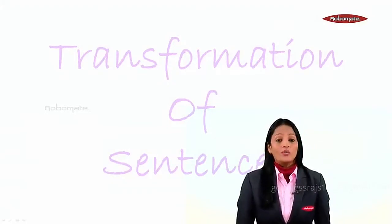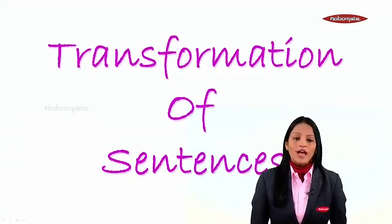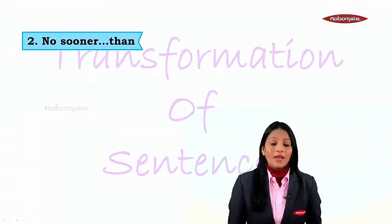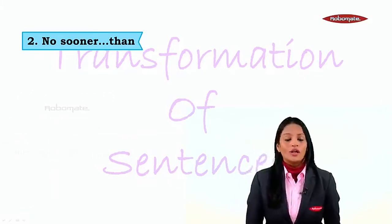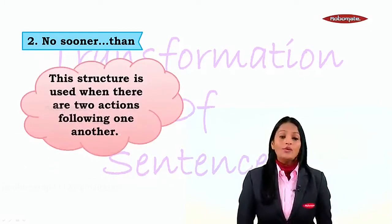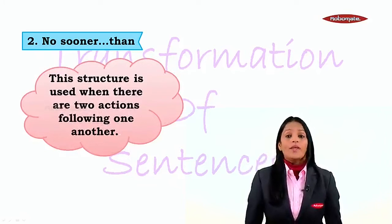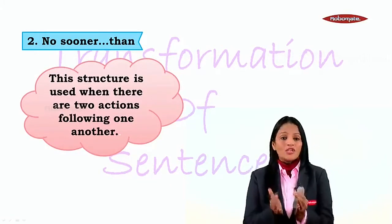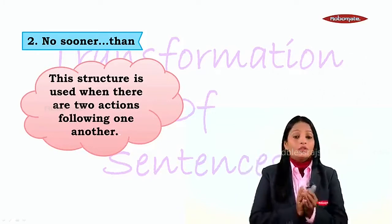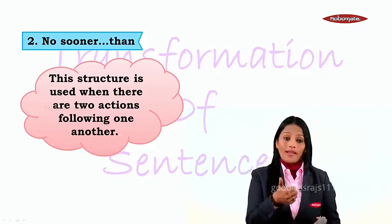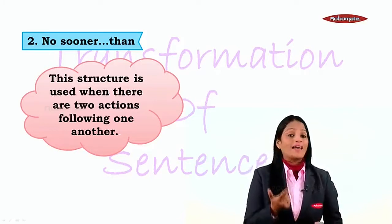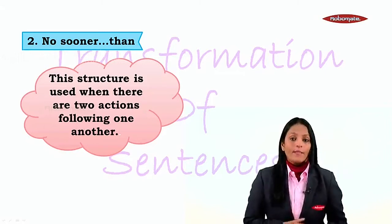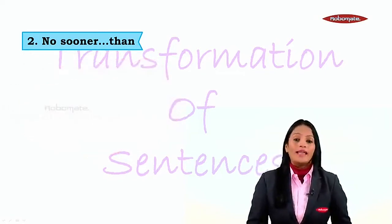Hello students. Let's go on with the next module of transformation of sentences — the next type: using 'no sooner...than.' This structure is used when there are two actions following one another, meaning one action just gets over and the other one starts. This could be indicated with 'when' or 'as soon as,' and both can be converted into 'no sooner...than.' Let's see this with an example.